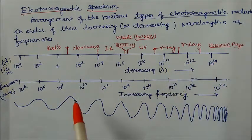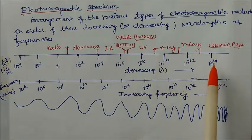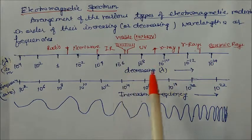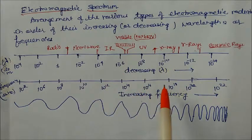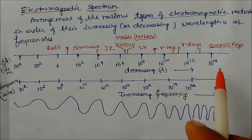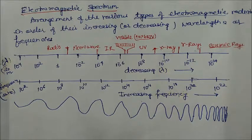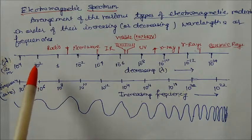Similarly, frequency increases in the other direction. If wavelength is decreasing, frequency is increasing, because the speed of electromagnetic radiation is constant — close to the speed of light, as seen in previous lectures. The frequency of cosmic rays is about 10 to the power 22 hertz.